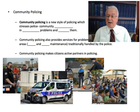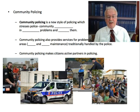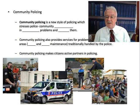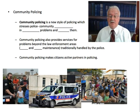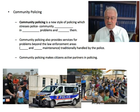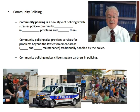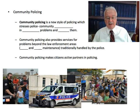Community policing brings all of this together — police-community relations, team policing, and more. Community policing is a style which stresses police-community partnerships in identifying community problems and then solving them collaboratively. The police meet with community members, figure out the problems, try to solve them collaboratively with the public, and community members can participate. Community policing also provides services for problems beyond traditional law enforcement and makes citizens active partners in policing — partnership is a very key word in this concept.